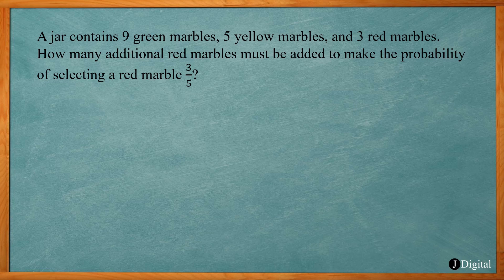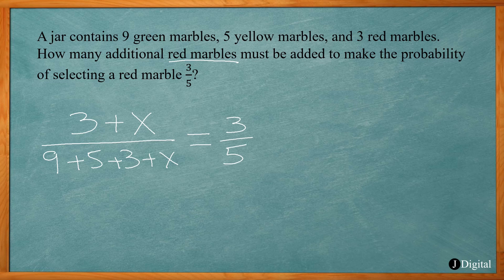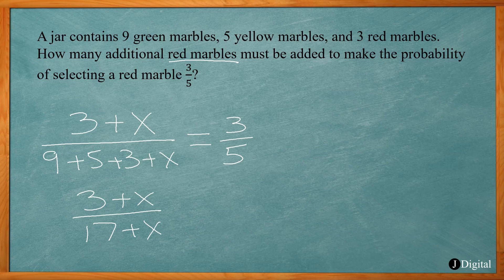The favorable outcome here is selecting a red marble. We currently have three red marbles and we're going to add an additional X red marbles. For the total possible marbles, we have nine green plus five yellow plus three red, plus the X additional red ones we'll add. We want that probability to equal three-fifths.